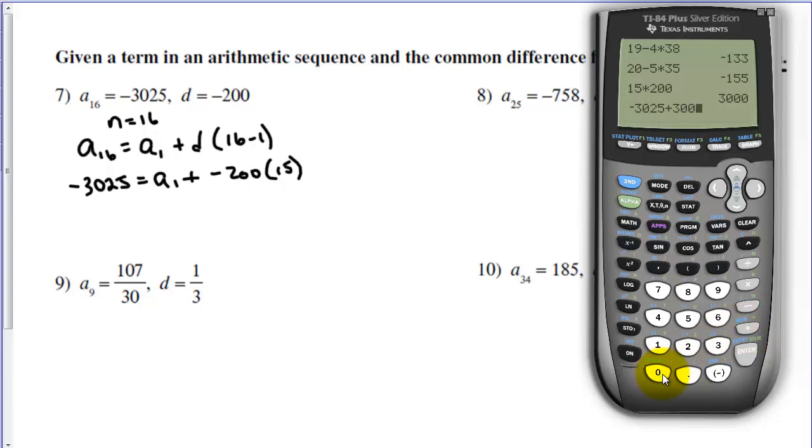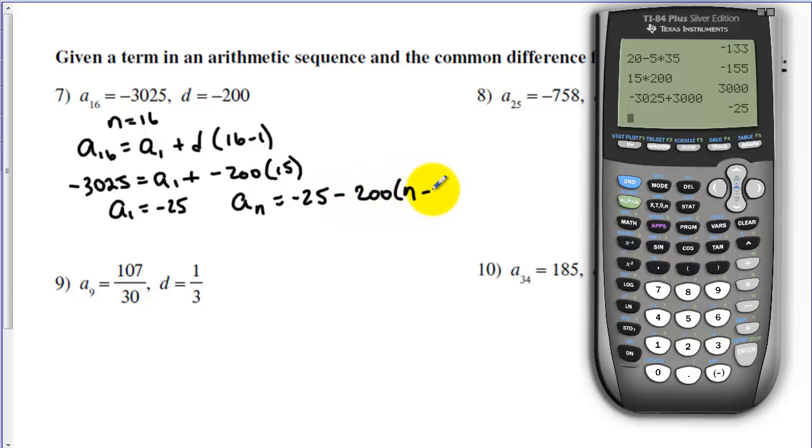We are going to add 3000 to the other side. So we're going to have negative 3025 plus 3000, which equals negative 25. So a sub 1 equals negative 25. Now we can write the rule, plugging in a sub 1 and our d, and leaving n as a letter. And now we can simplify. Our explicit rule would be that.